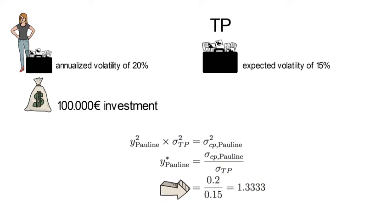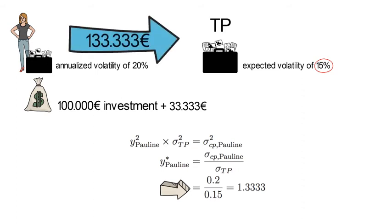Plugging in the numbers, in that example, you have 0.2 divided by 0.15, which gives you 1.333. So that solution would say that as Pauline is willing to be exposed to 20% of systematic volatility, while the TP portfolio is exposed to 15% volatility, the optimal portfolio for Pauline would be to borrow an additional 33,333 euros at the risk-free rate and to invest a total of 133,333 euros into the tangency portfolio.